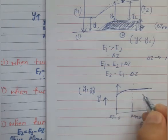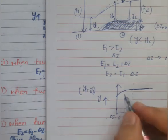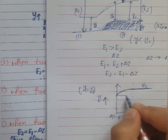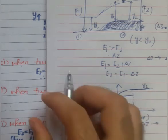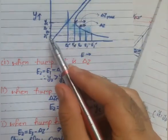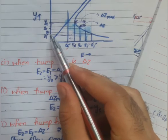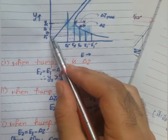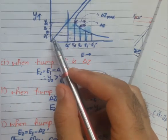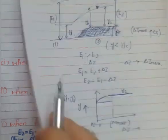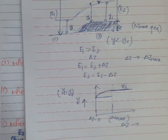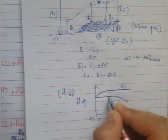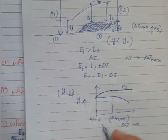For y1, the depth remains constant up to ΔZ_max. After that, since we must increase the specific energy at section 1, y1 decreases — from y1 to y1-dash to y1-double-dash. So the plot for y1 shows a constant value up to ΔZ_max and then a decreasing trend beyond it.